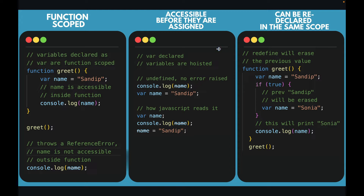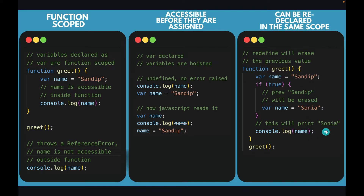Var declared variables are hoisted, meaning you can access the variable before defining them. So you can see that I can access the name variable before it has been defined. Var can be redeclared in the same scope, which is going to erase the previous value. So I have name declared inside a create function and inside an if block I have redeclared name, which erases the previous value of Sandeep and gives the output as Sonia.